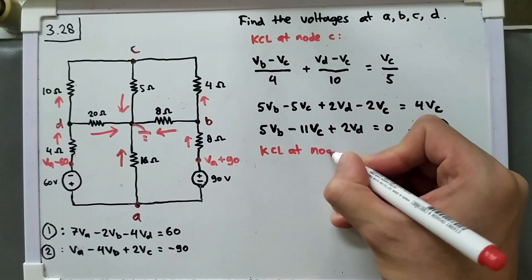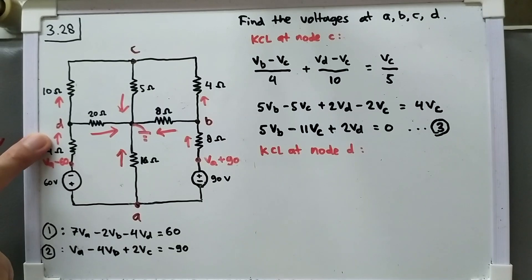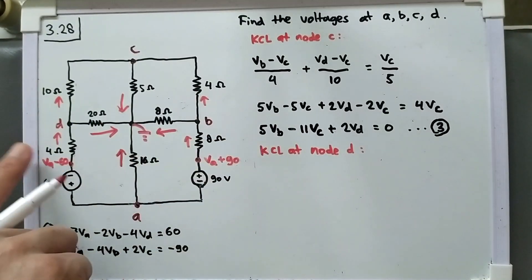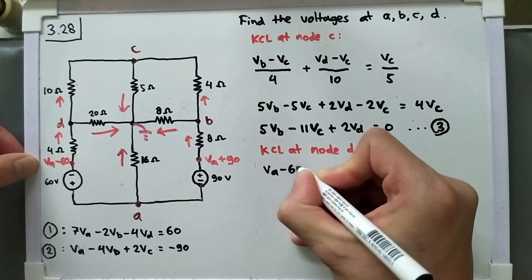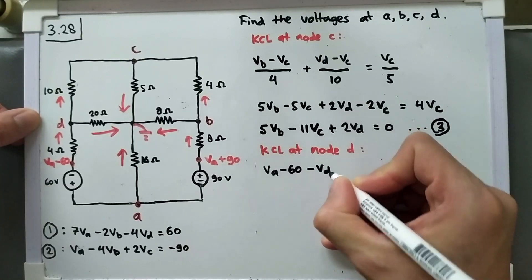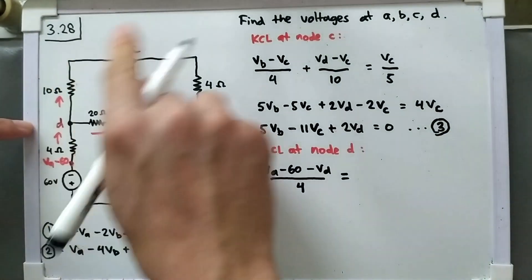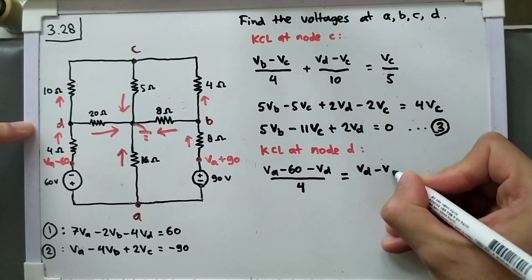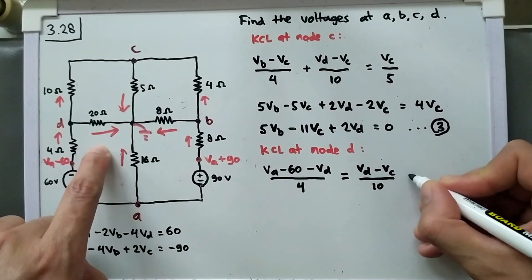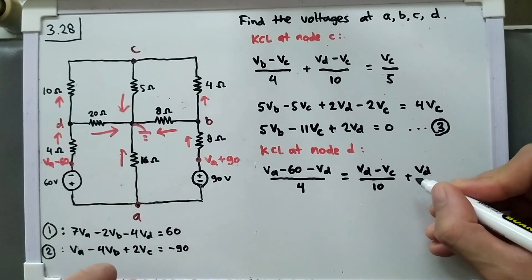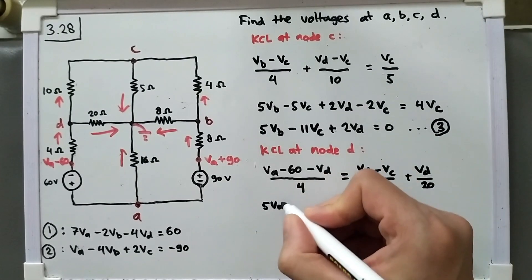KCL at node D: the current going in equals current going out. The only current going in is this one; the others go out. Starting with the incoming current: (VA minus 60 minus VD) divided by 4, equals (VD minus VC) divided by 10, plus VD divided by 20. Multiplying both sides by 20: 5VA minus 300 minus 5VD equals 2VD minus 2VC plus VD.